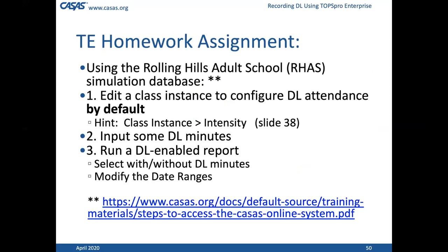Thank you to Oscar for recommending the Rolling Hills adult school to try things first. The homework assignment is: grab a class instance, set the flags to configure distance learning attendance, look at slide 38 if you don't remember how to do that, input some distance learning minutes, and then run one of the DL-enabled reports from the set of five. You can mess with date ranges, turn DL minutes on and off, and see how that works.